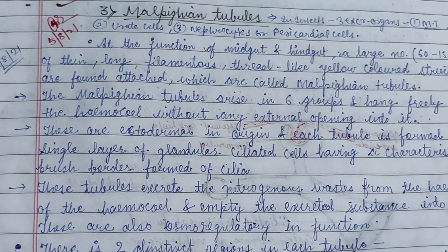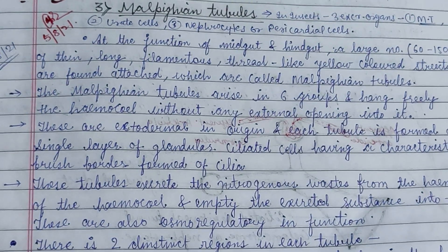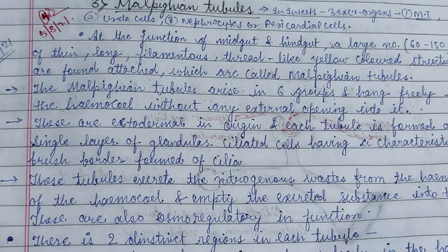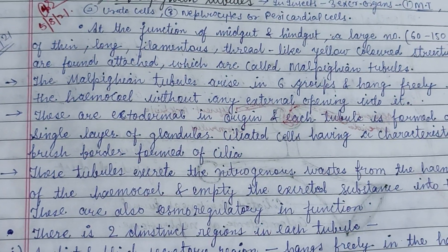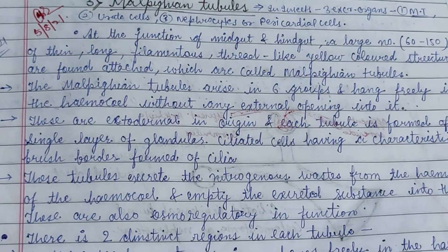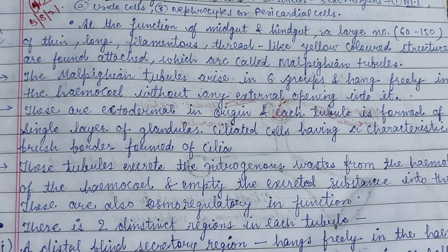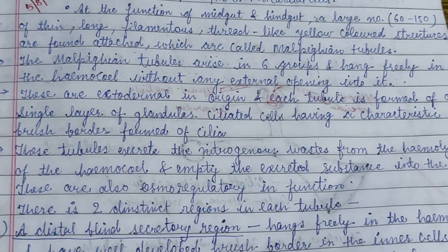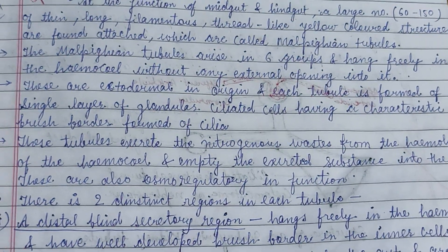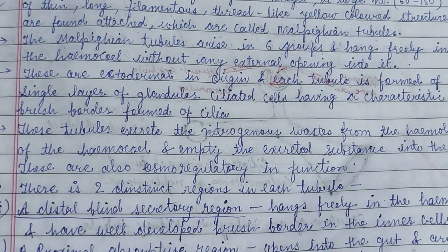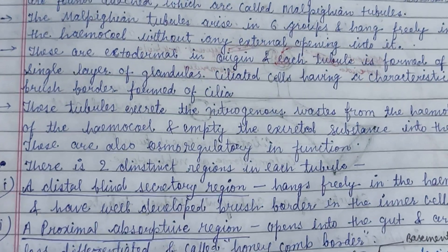Hi friends. Here is a short description about the Malpighian tubule, which is an excretory system in the insects and birds. At the junction of the midgut and the hindgut, a large number of thin, long, filament and thread-like yellow-colored structures are found attached, and these are all called the Malpighian tubule.